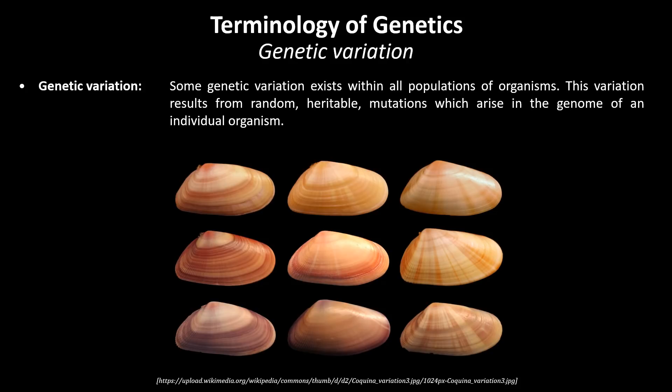The picture below shows the shells of mussels of the same species, which all can interbreed. The differences in their shell patterns give an impression of the phenotypic variation in the population.